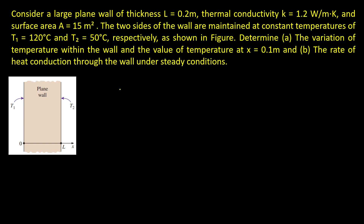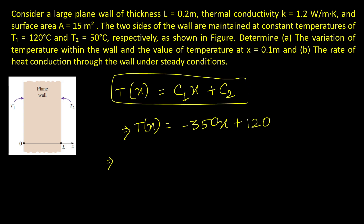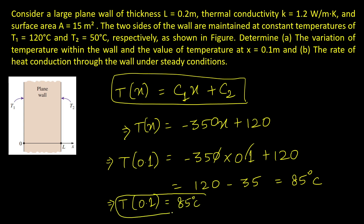The temperature variation within the wall is: T(x) = −350x + 120. This is the answer to part A — the variation of temperature. The value of temperature at x = 0.1 m is: T(0.1) = −350·(0.1) + 120 = 120 − 35 = 85°C. So the temperature at x = 0.1 m is 85°C.